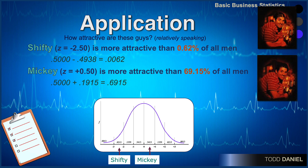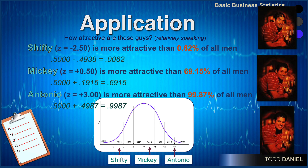Mickey, who is slightly above the mean with a z-score of 0.50, we know will be more attractive than at least half of the men. However, at 0.5 standard deviations above the mean, he is more attractive than 69.15% of all men who have taken this test. And as you might imagine, Antonio, with his z-score of positive 3.00, is more attractive than 99.87% of all men.